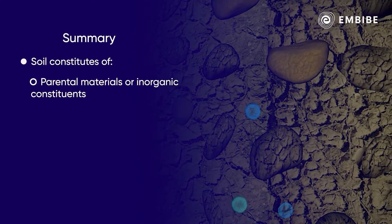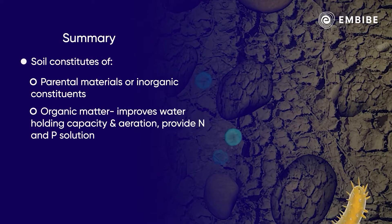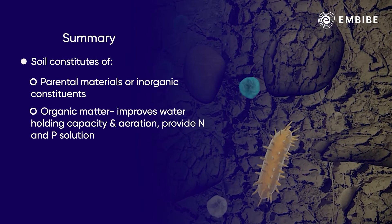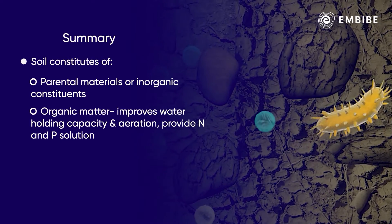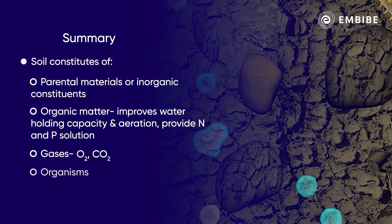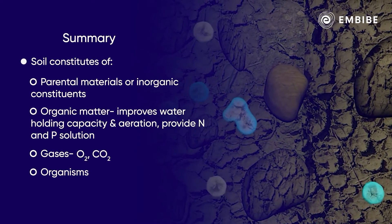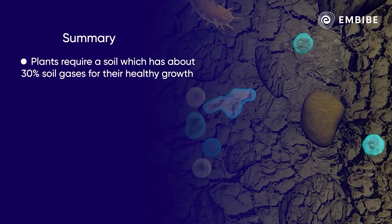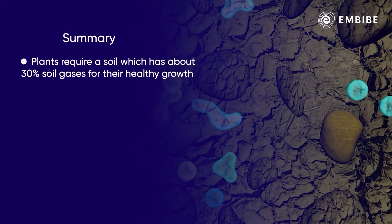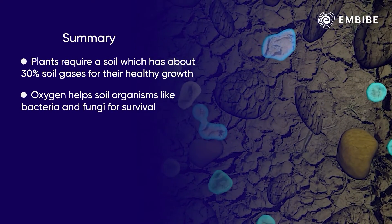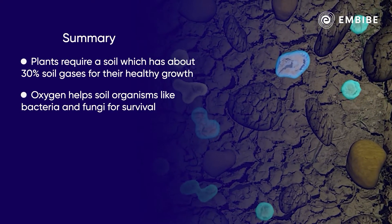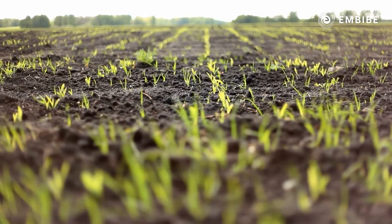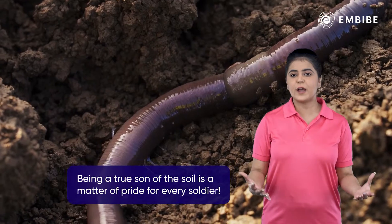To summarize: soil consists of parental materials or inorganic constituents; organic matter, which improves water holding capacity, aeration, and provides nitrogen and phosphorus; soil solution; gases such as O2 and CO2; and organisms. Plants require about 30 percent soil gases for healthy growth, and oxygen helps soil organisms like bacteria and fungi survive.